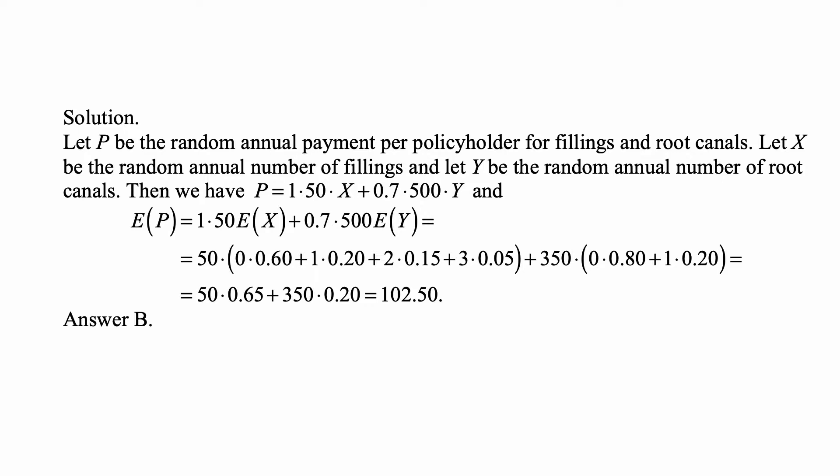Plus 0.7 times 500, because the company pays 70% of the cost of the root canal, so 70% of 500, times Y, which is the random number of root canals. We're looking for the expected value of P, which is 1 times 50 times E[X] plus 0.7 times 500 times E[Y].